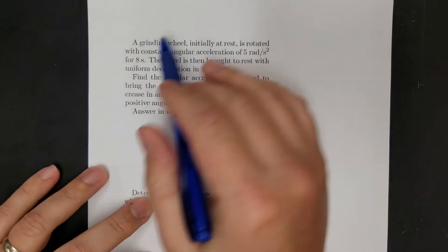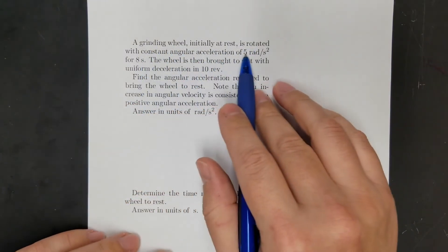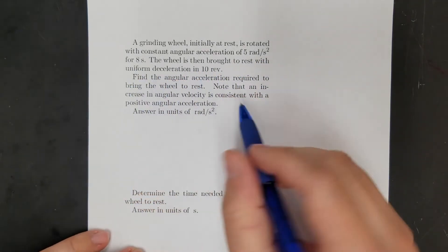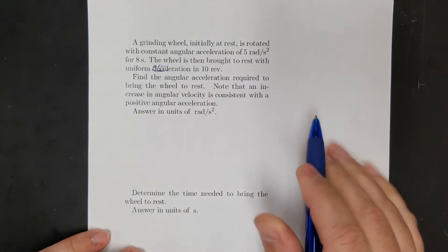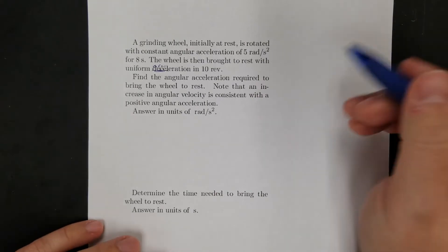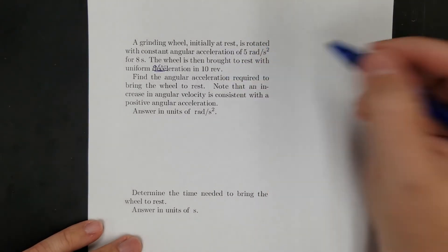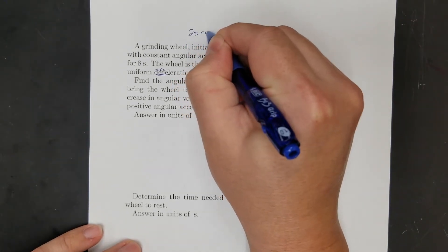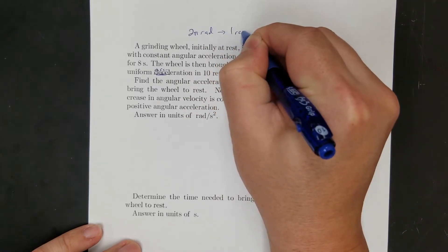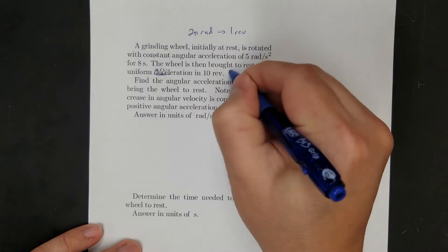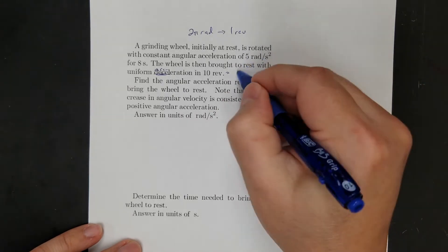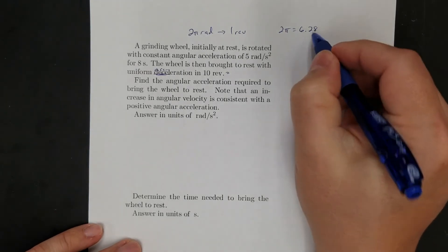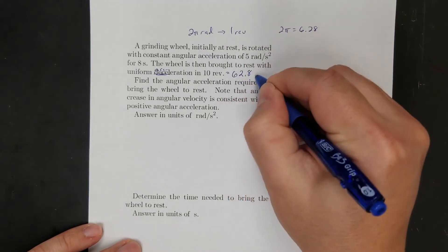This third problem: a grinding wheel, initially at rest, rotates with a constant angular acceleration of 5 radians per second squared for 8 seconds. The wheel is then brought to rest with uniform deceleration in 10 revolutions. I know right away I've got to convert revolutions to radians. There are 2 pi radians in 1 revolution, so 10 revolutions equals 2 pi times 10. Since 2 pi is 6.28, 10 times 6.28 gives me 62.8 radians.